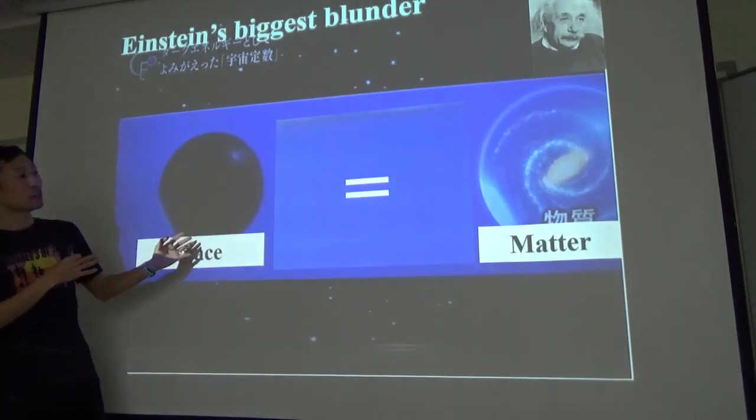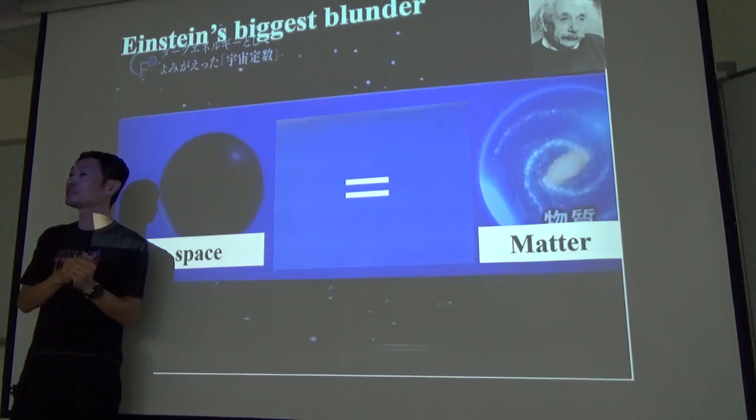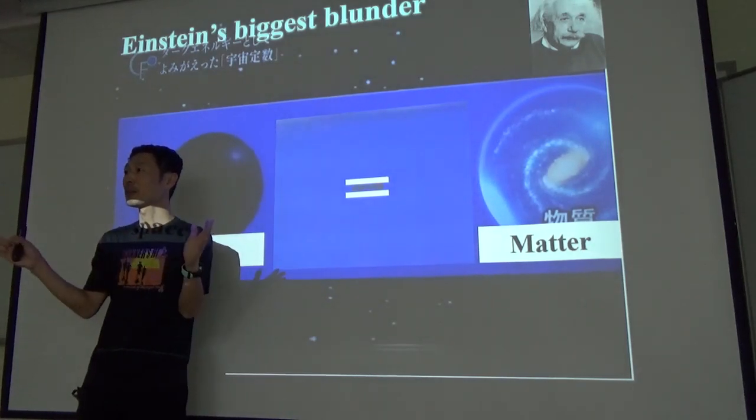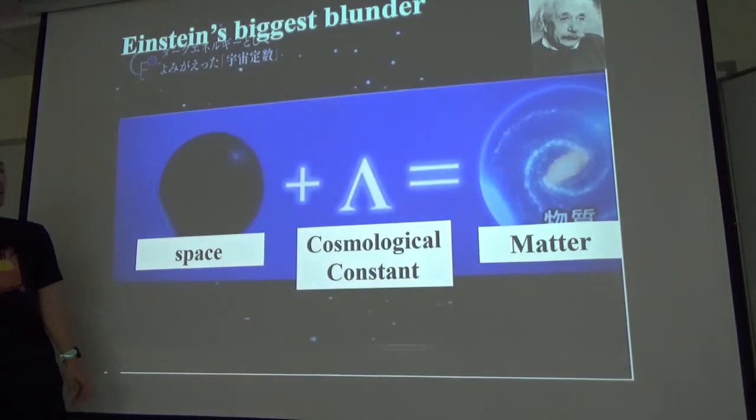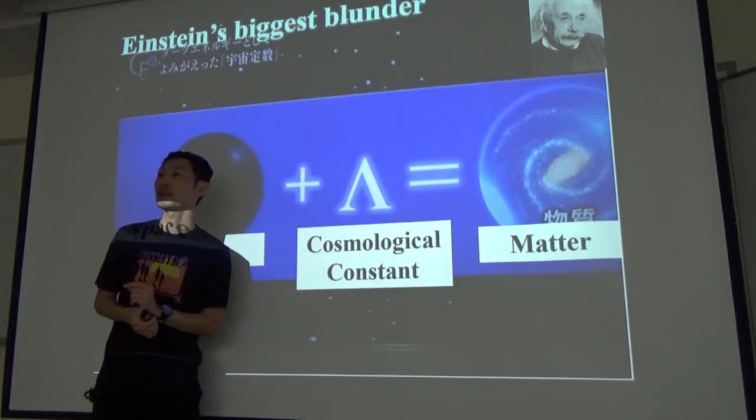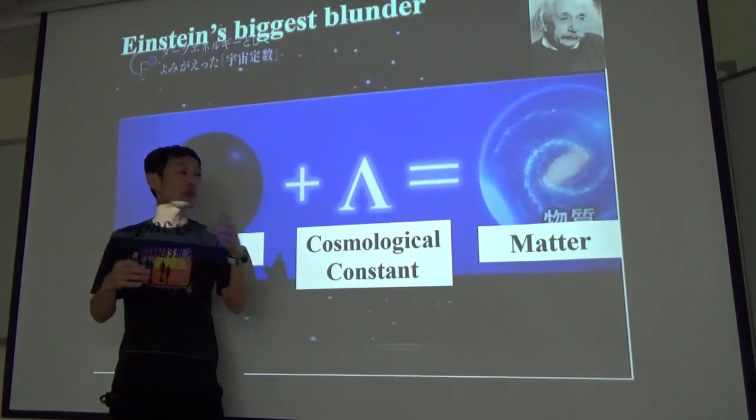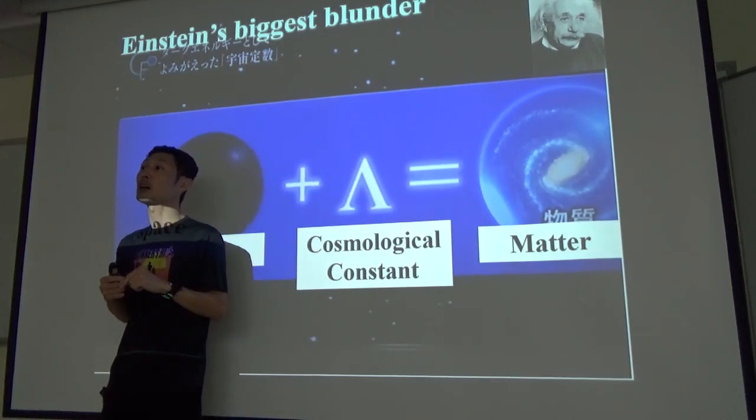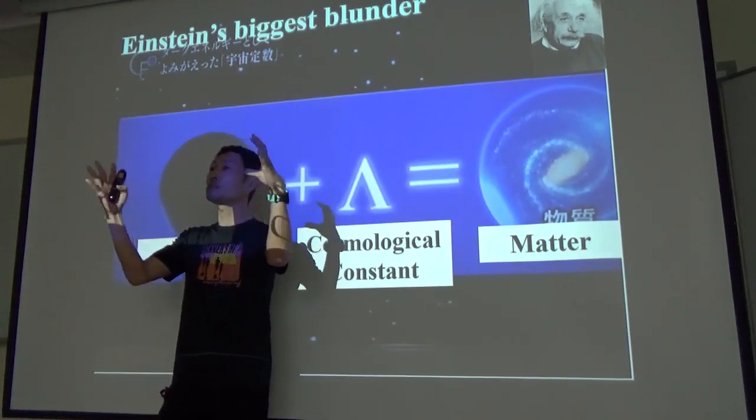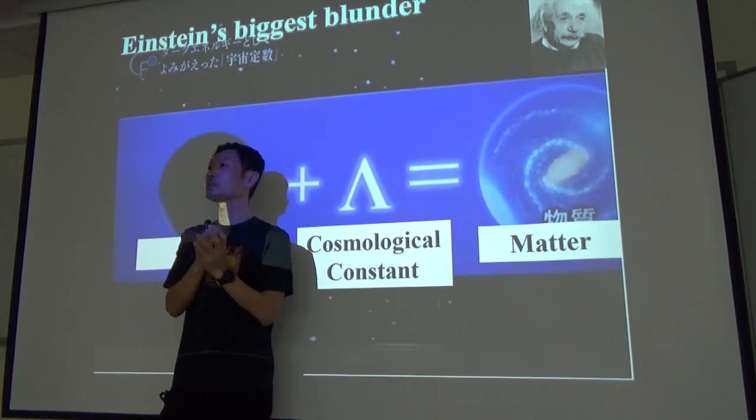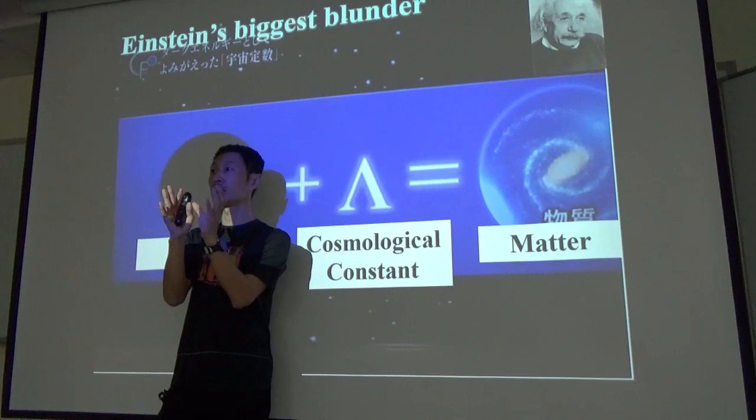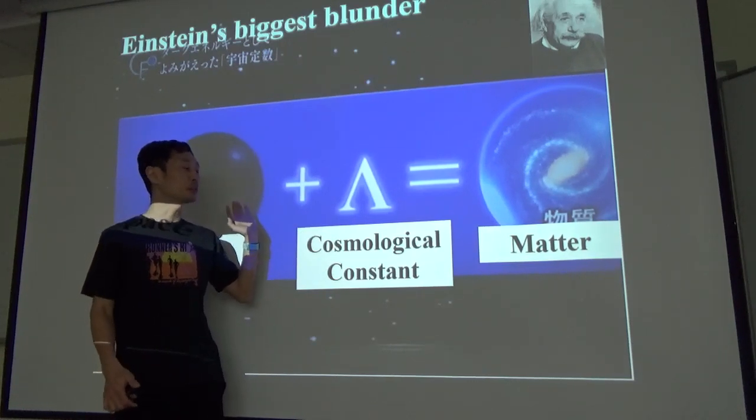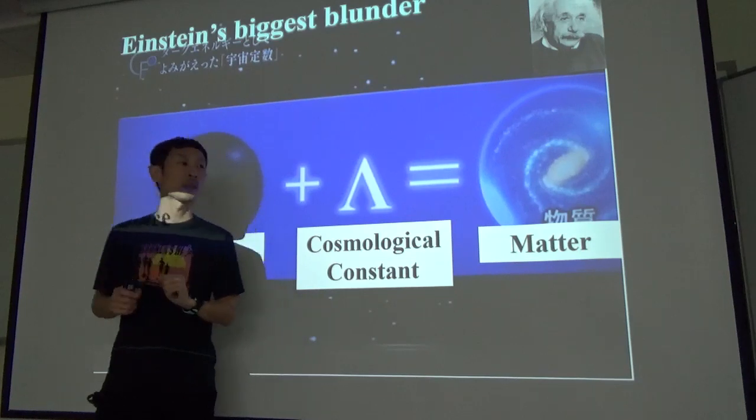Einstein looked at this equation and noticed that, and then he thought this is wrong, because at that time people believed that the universe is static, the universe is stable. So that's why Einstein added something here called cosmological constant to make the universe static. So gravity is going to pull in force, so Einstein added something to cancel it out, something positive. So this cosmological constant is something repulsing force, and then to make the universe static, not expanding or collapsing. So now Einstein is happy. With this cosmological constant, this equation, the universe in this equation is static.